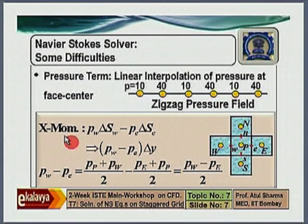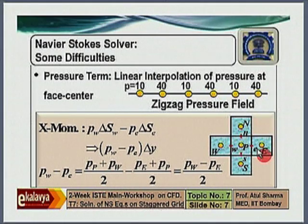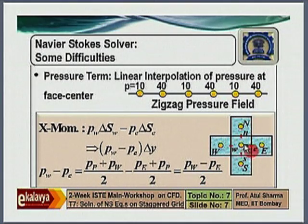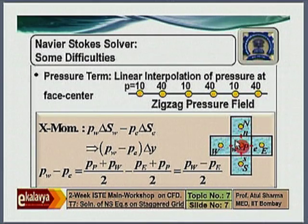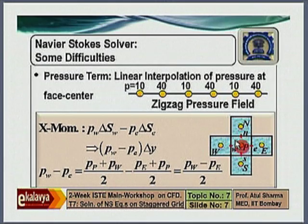The algebraic equation for velocity at a given grid point does not use the pressure of that same grid point. There is a breakage in the communication between velocity and pressure at the same grid point. This is what is called pressure-velocity decoupling, which can result in a flow field with a zigzag pressure and wavy velocity distribution that still satisfies mass and momentum conservation.